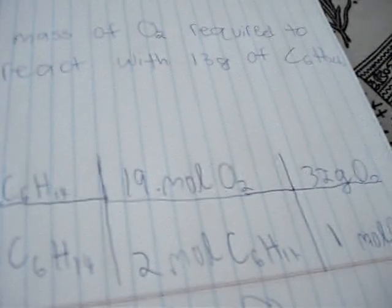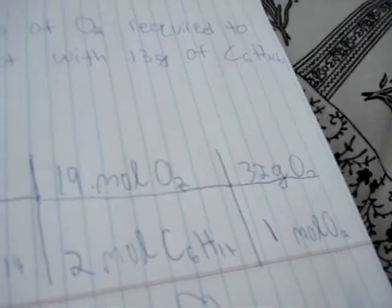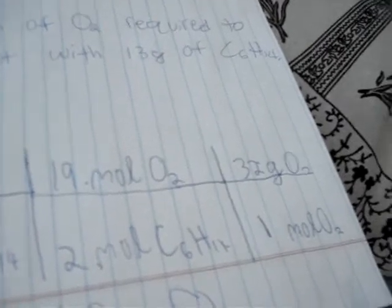And then we're going to convert from moles to grams of O2. And we're going to get that mass off of the chart, off of the periodic table. And we're going to put that over 1 mole of O2. So we're going to multiply the top out, and then we're going to divide it by everything on the bottom. And we should get approximately 46 grams of O2.